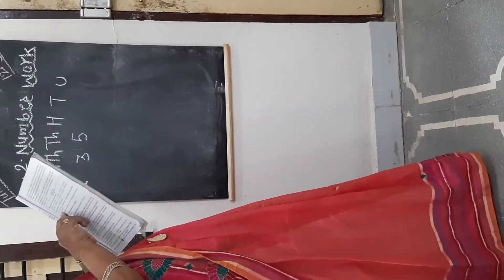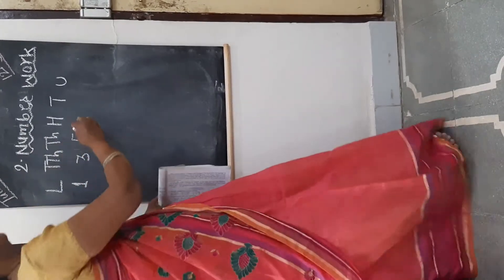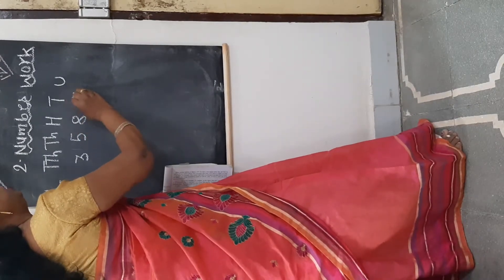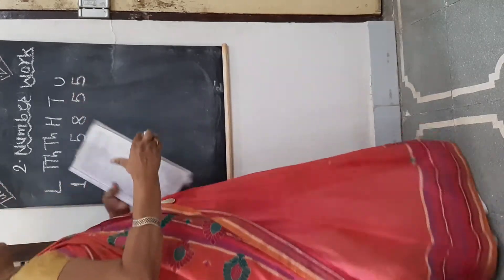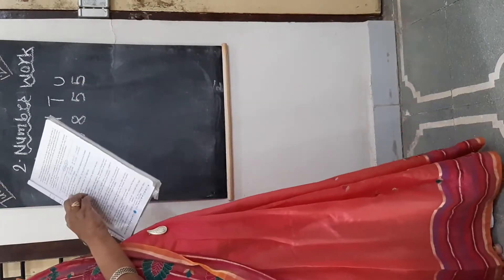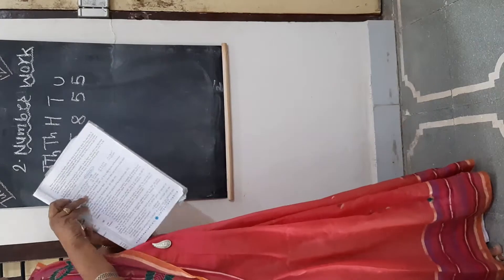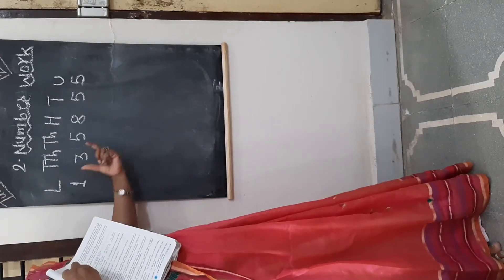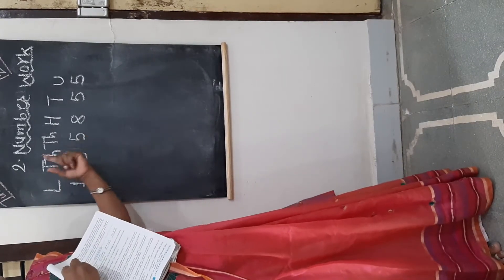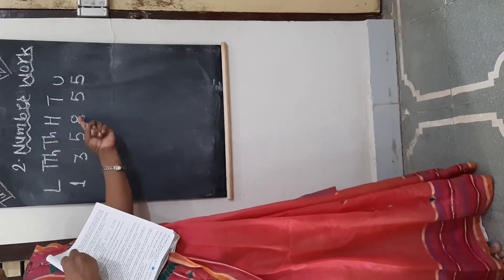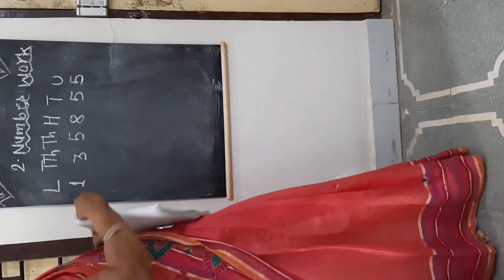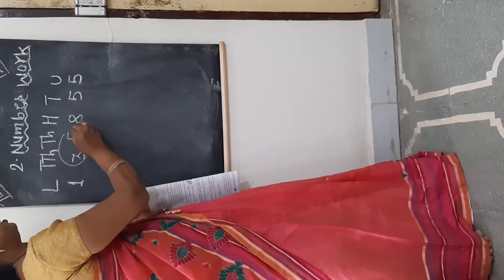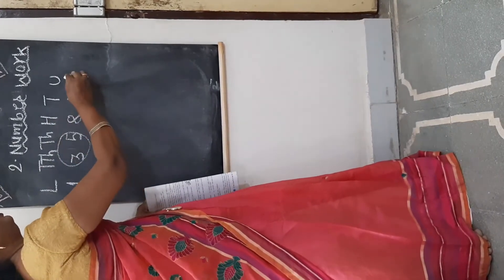Now see how many hundreds? 855. This number was given in words and we have written it here in figures: 1,35,855.